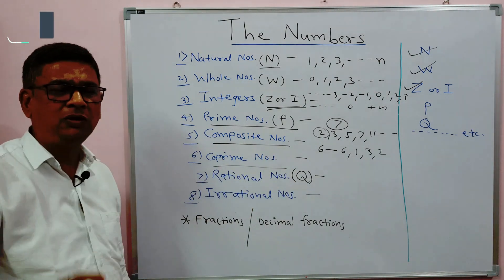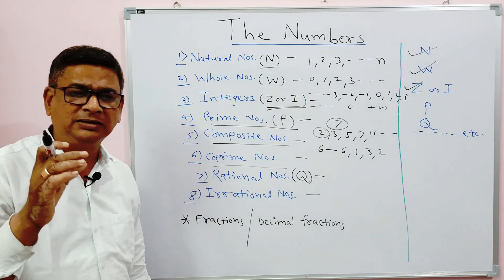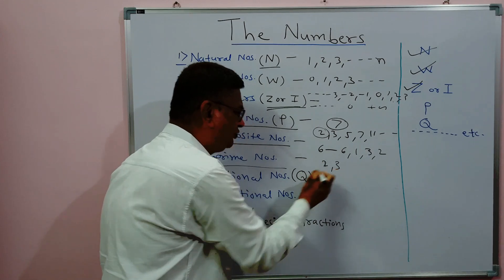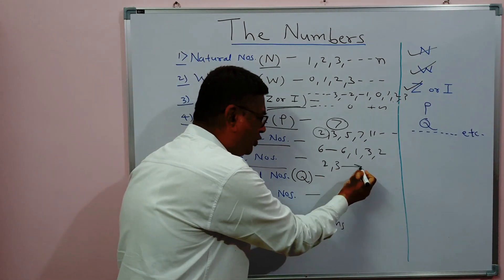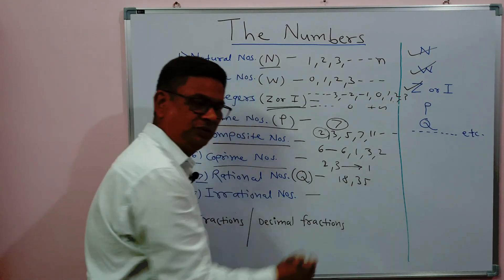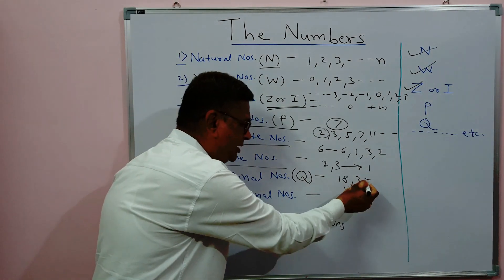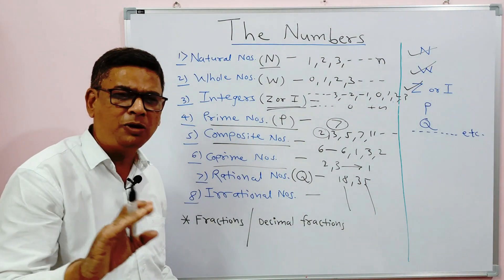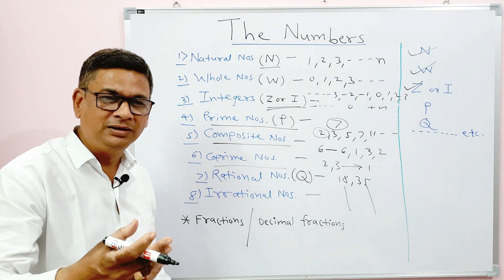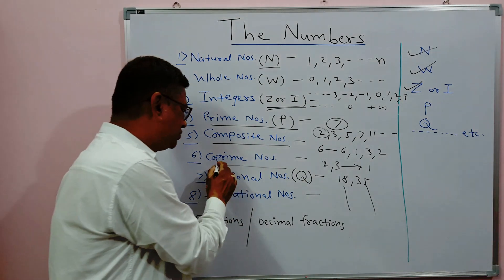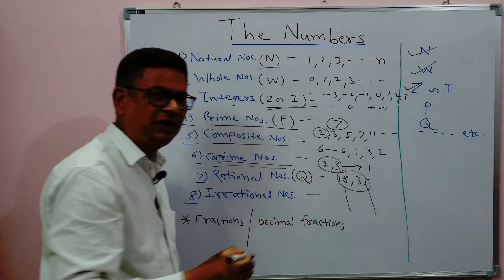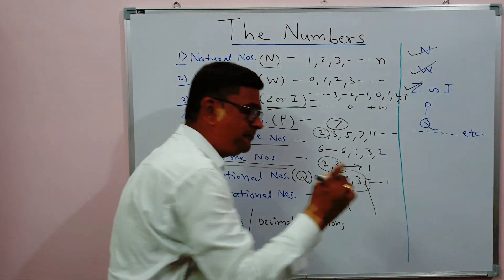Next are co-prime numbers. Co-prime numbers come in pairs. For example, 2 and 3 have only 1 as their common factor. Another example: 18 and 35 — if you find the factors of 18 and 35, there is no common factor other than 1. Since 1 is a factor of every number, pairs like (2, 3) and (18, 35) are called co-prime numbers — they have only the common factor of 1.